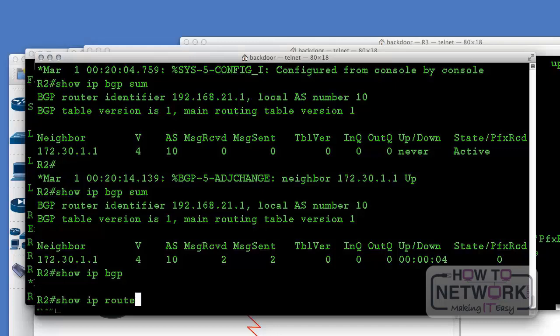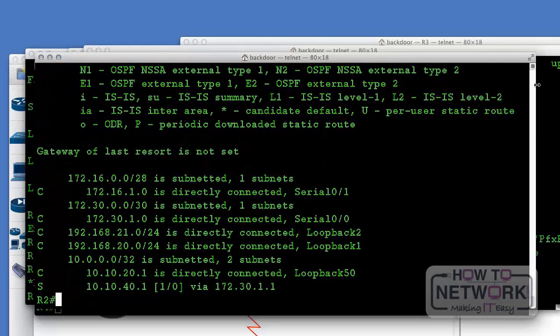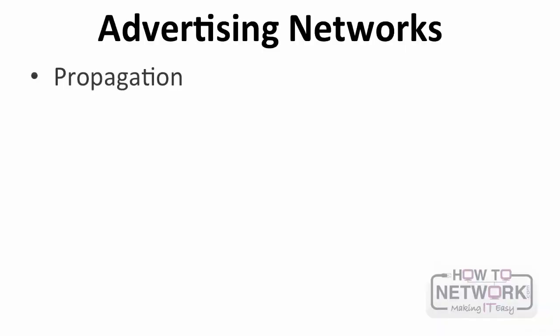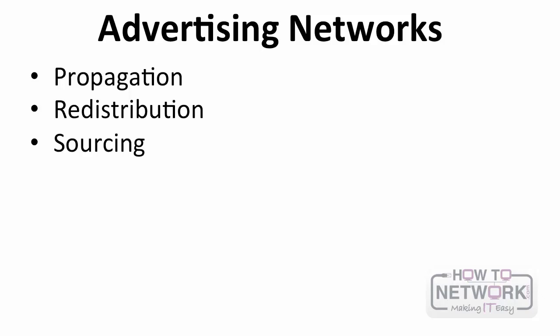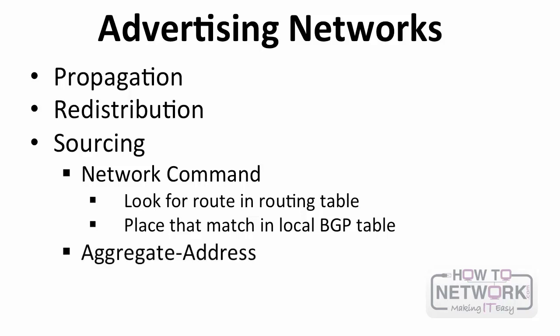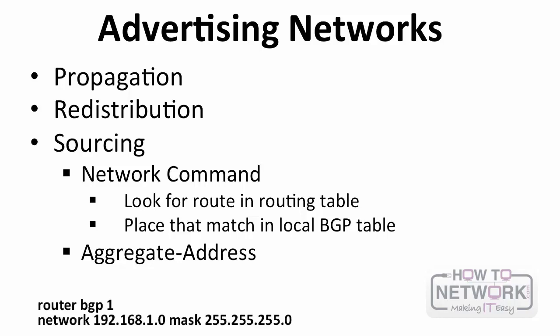When we do 'show ip bgp' or 'show ip route,' we don't see any BGP routes being shared because we're not inserting anything into BGP yet. To advertise networks, you can do it many ways: propagation of received BGP routes, redistributing routes into BGP, or sourcing routes from your router using the 'network' command, which specifies the exact network to insert into BGP — requiring a match in the local routing table. You can also use 'aggregate-address' to aggregate multiple routes into one larger route.